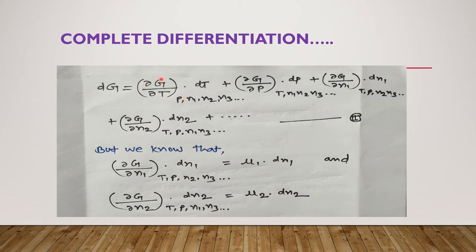When taking the differentiation with respect to temperature, all remaining quantities remain constant. In the second step, we have (∂G/∂P)·dP, where without pressure the other quantities — temperature, N1, N2, N3 — remain constant. This gives us equation number 2.